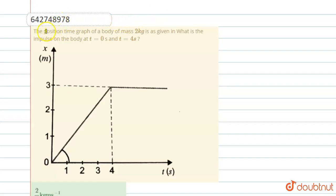The position-time graph of a body of mass 2 kg is as given. What is the impulse on the body at t equals 0 and t equals 4 seconds? So in this question, we have to find the impulse at t equals 0 second and t equals 4 seconds.